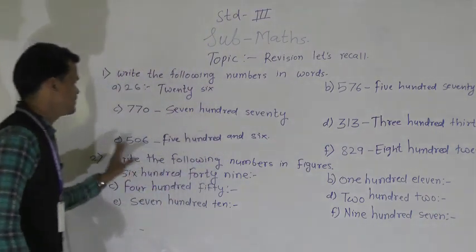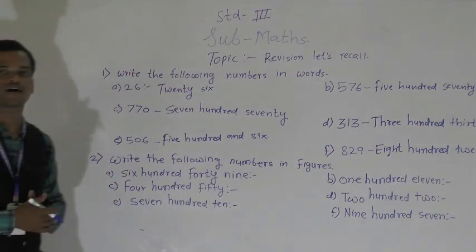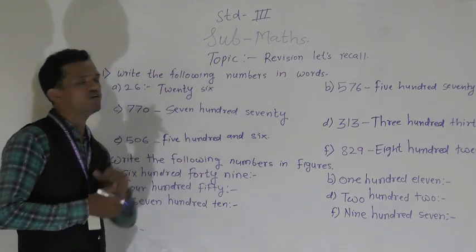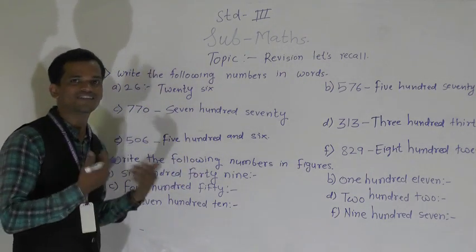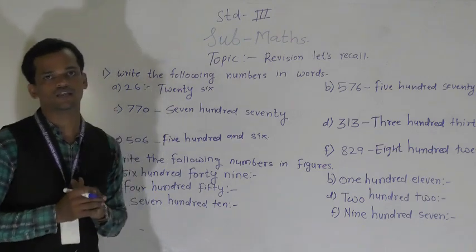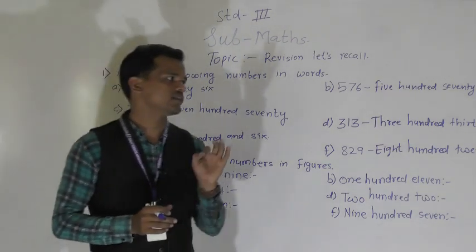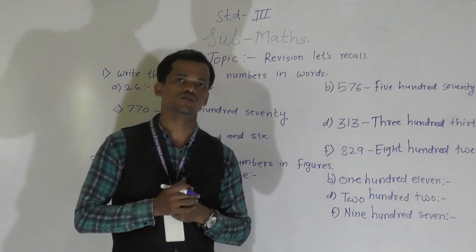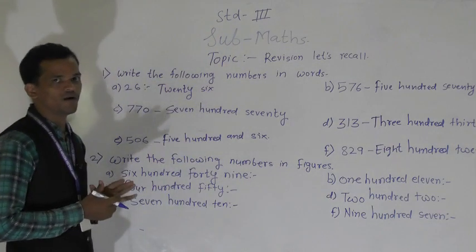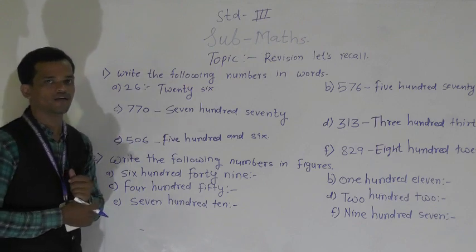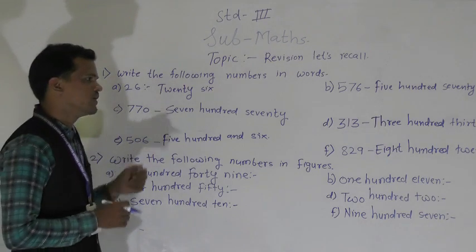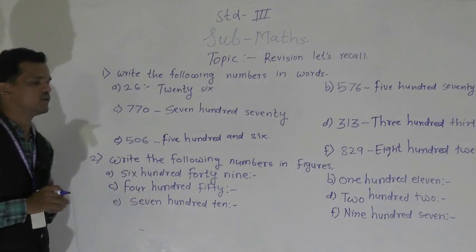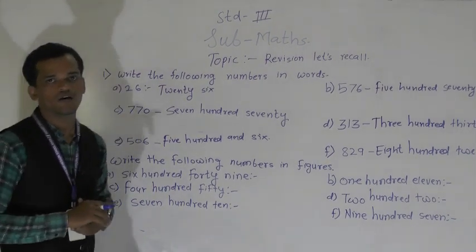Then next question: the numbers are given in words. In this question, write the following numbers in figures. The numbers are given in words and you have to write that number into numerals or in figures. So first read the number and then write the given number into numerals. First number: six hundred forty-nine, 649.